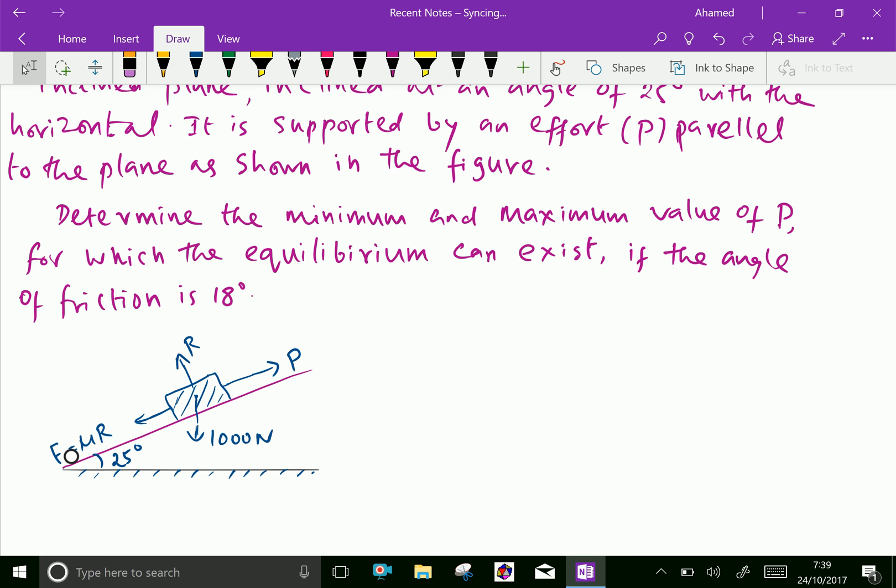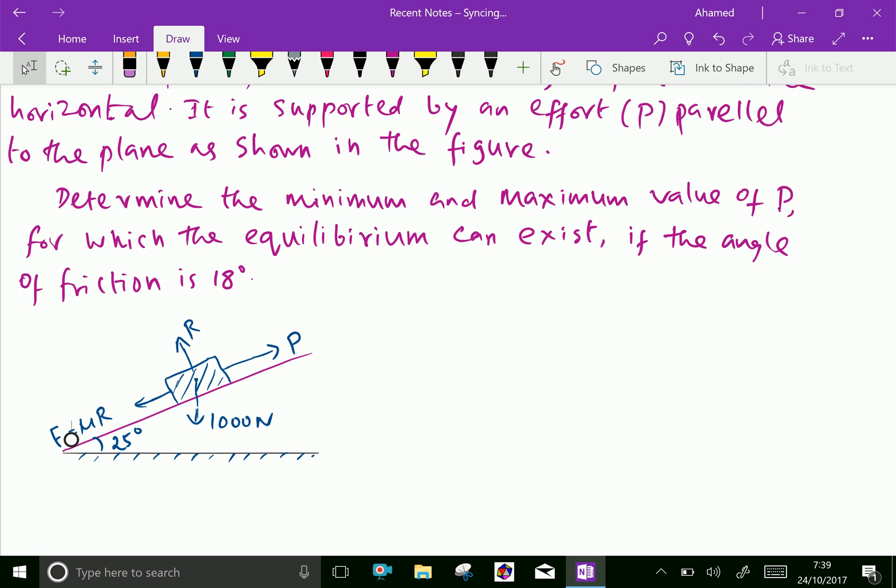Let us write the given things. Alpha equals 25 degrees and phi angle of friction is 18 degrees. W equals 1000 Newton.